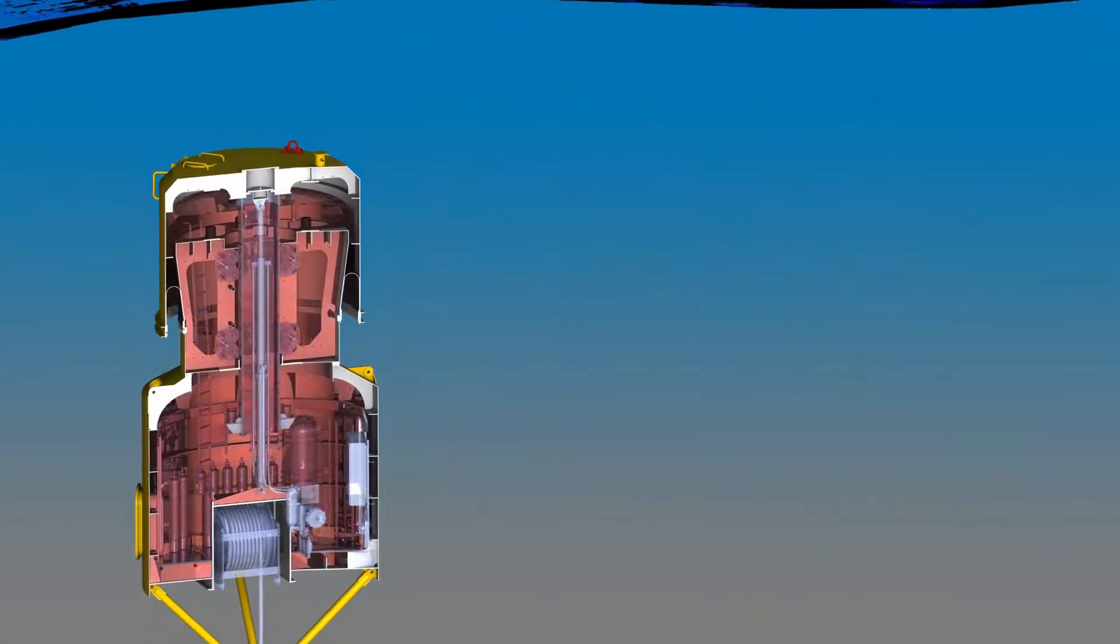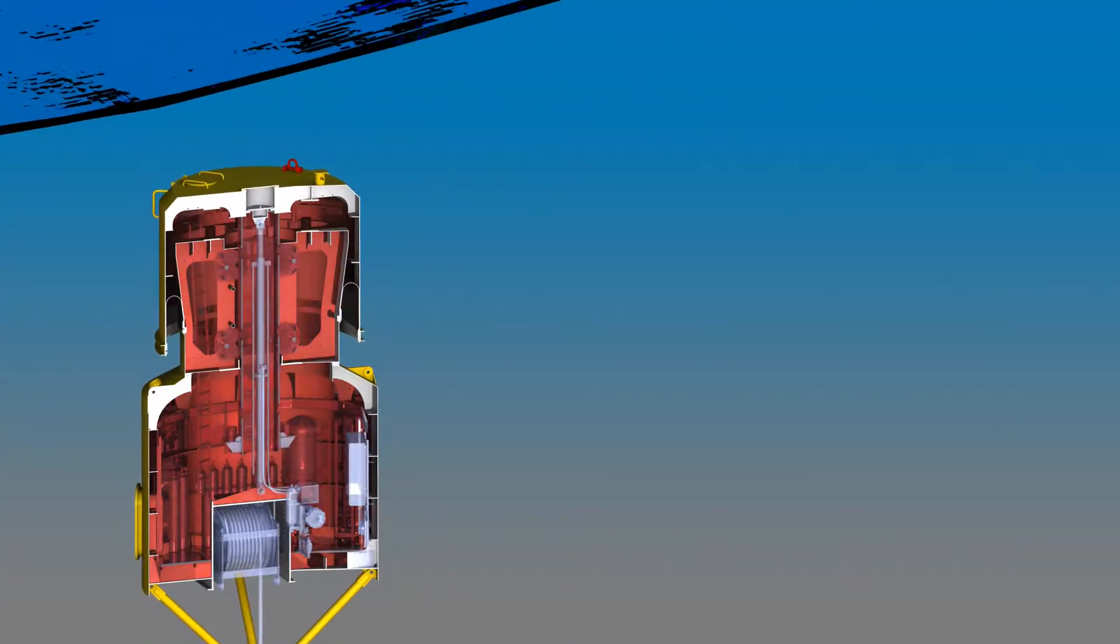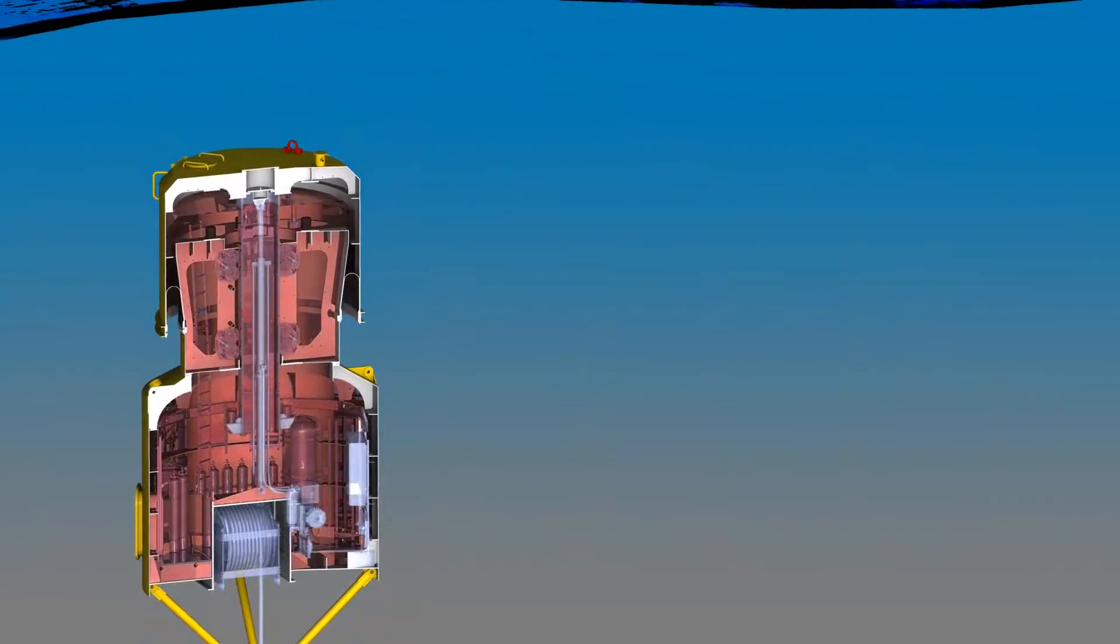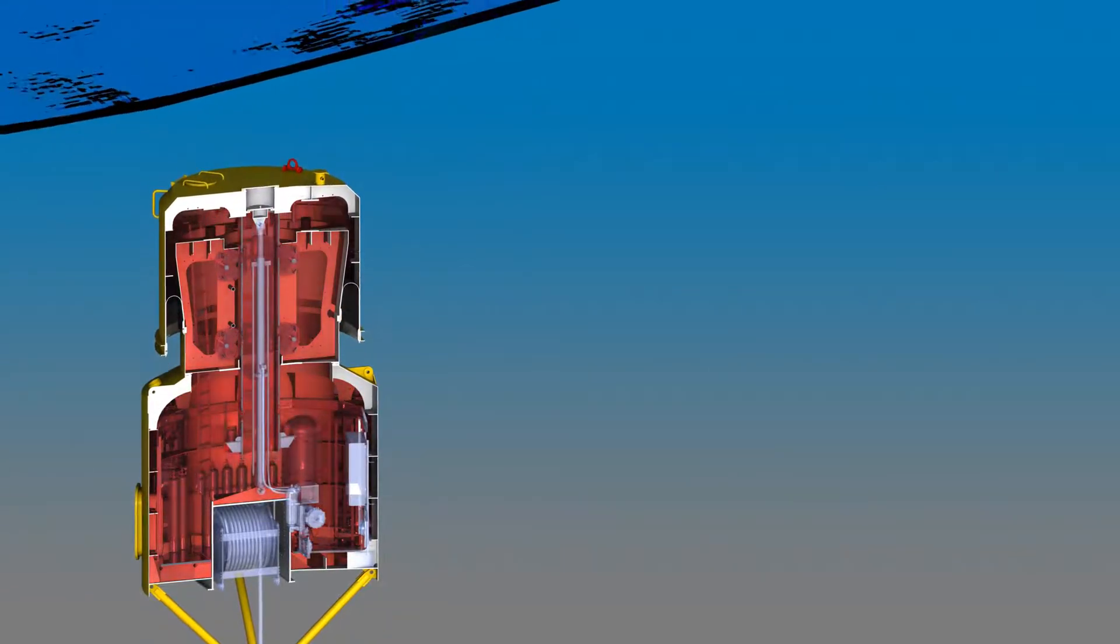Under a wave crest, the increasing hydrostatic pressure forces the floater downwards, compressing this air volume, which in turn acts as a spring to return the floater upwards.